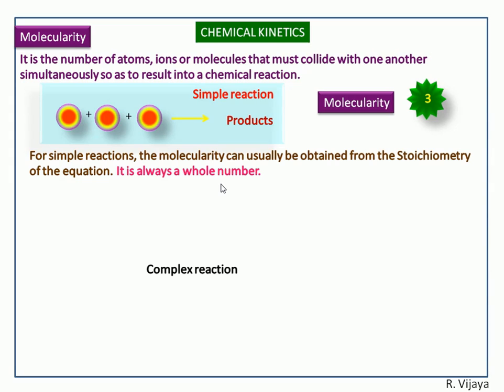Complex reaction is a reaction in which the reactant molecules are converted into product in multiple steps. Now we see the examples.